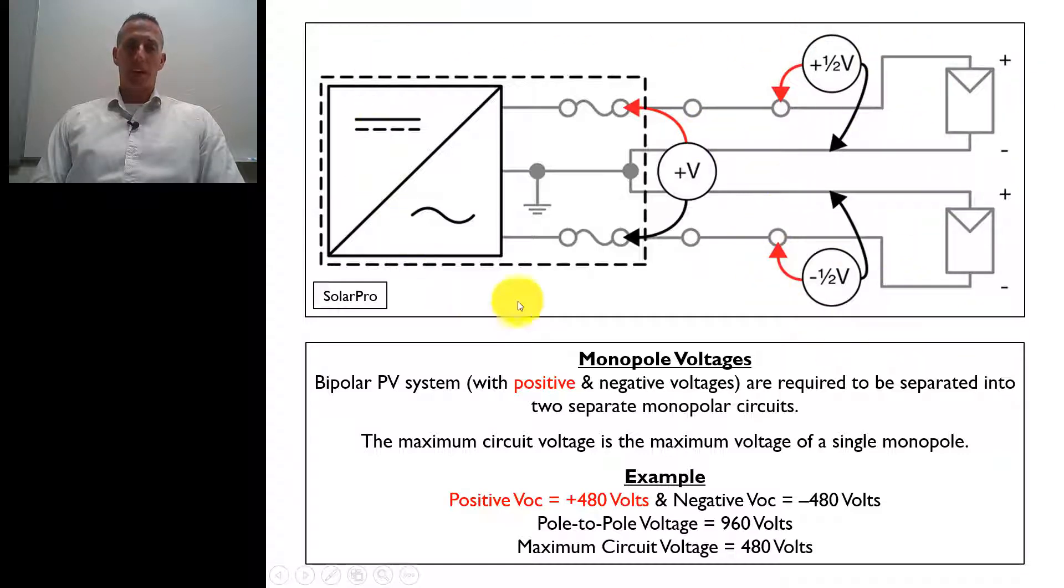Typically, when you're designing and installing these systems, you're going to have the string lengths be exactly the same, so you have the same voltage here, same voltage here, even though one's positive and one negative. So you would have a total voltage which would just be doubling one of these two.